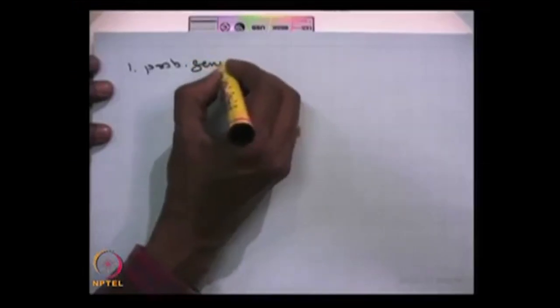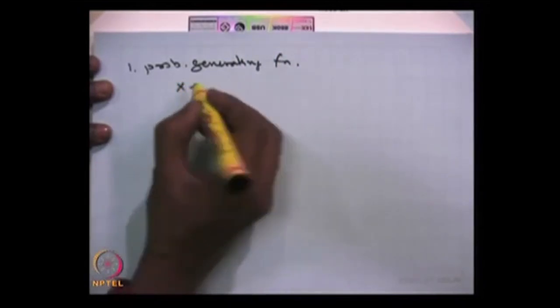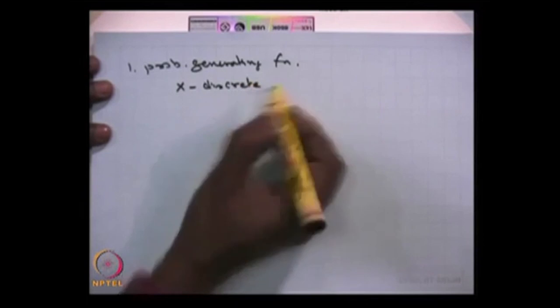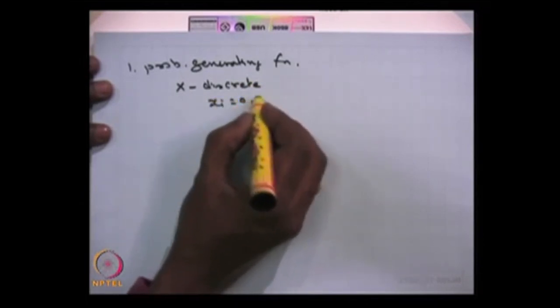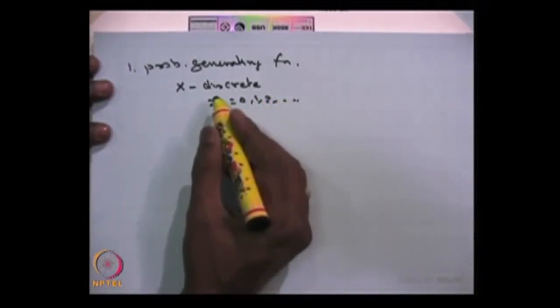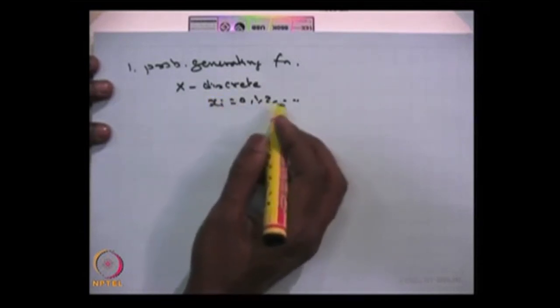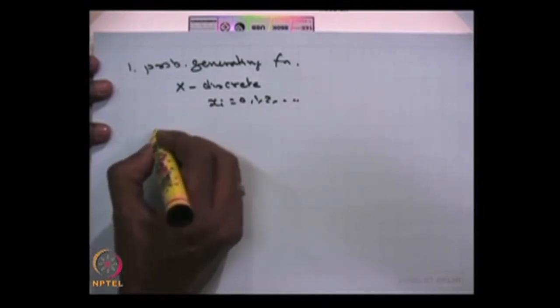We are going to discuss a few generating functions. The first one is called the probability generating function. This is possible only when the random variable is a discrete random variable and the possible values of X have to take 0, 1, 2, and so on. That means if the possible values of the random variable X take only 0, 1, 2 and so on, then you can define the probability generating function for the random variable X.